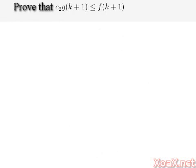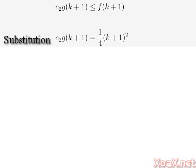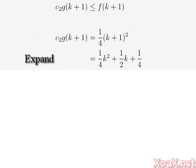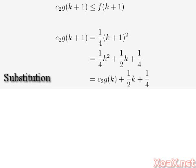Now let's move on to the second inequality. We need to show that c₂ times g(k+1) is less than or equal to f(k+1). We start with the left side and make our substitutions for c₂ and g(k+1) to get this. Next, we expand the product to get this, and then we replace 1/4 k² with c₂ times g(k).